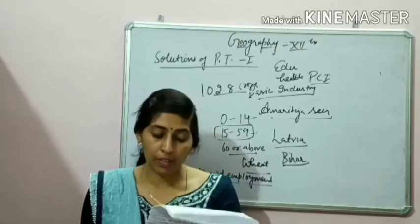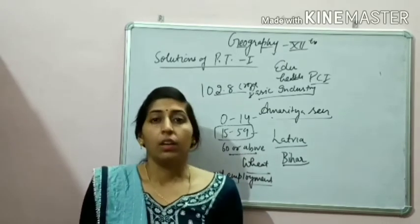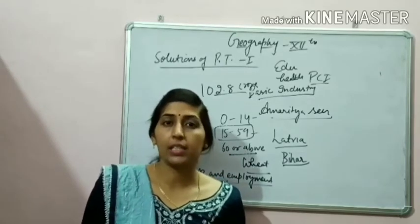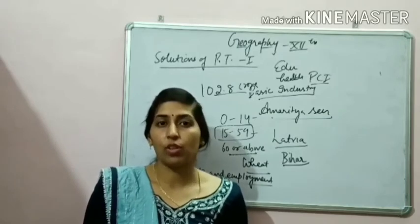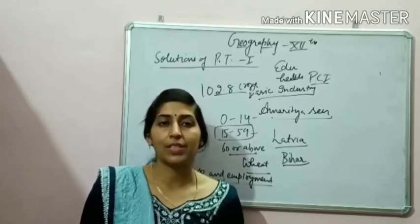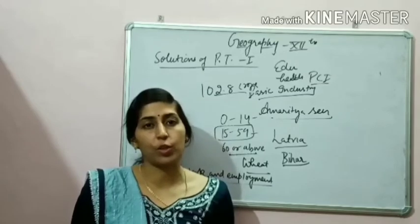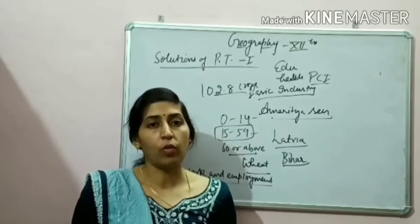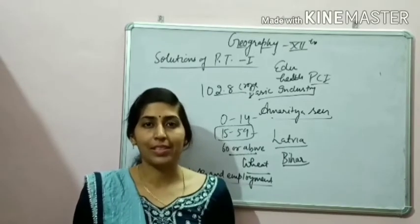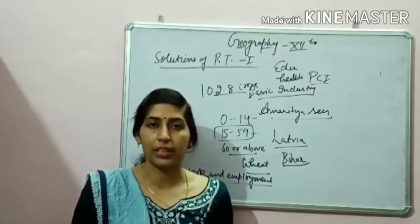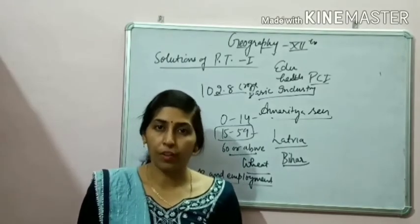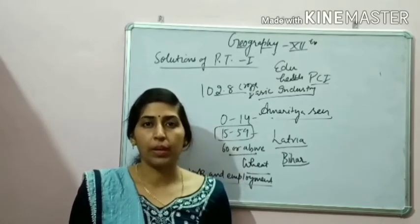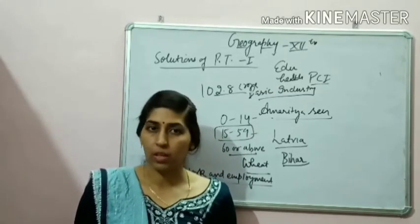The next question: which authority is responsible for national highway development and maintenance? The answer is the National Highway Authority of India (NHAI). It is responsible for the construction and maintenance of national highways, including the Golden Quadrilateral — a 4 to 6 lane highway connecting the four metropolitan cities of Delhi, Mumbai, Chennai, and Kolkata.